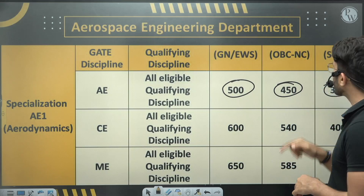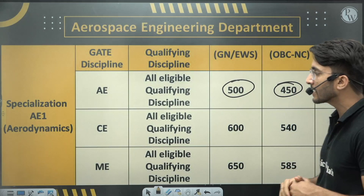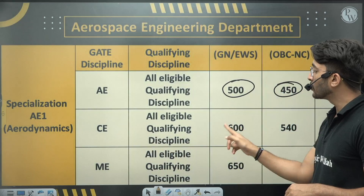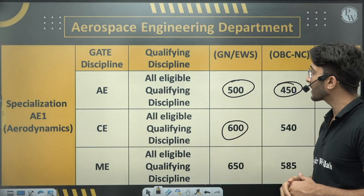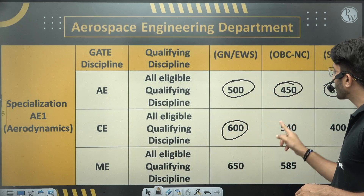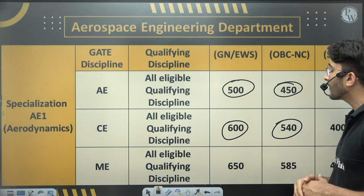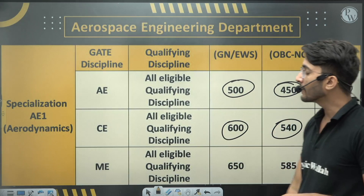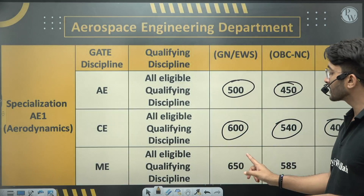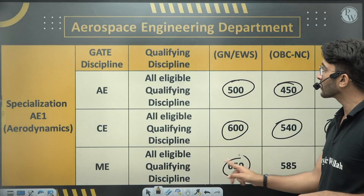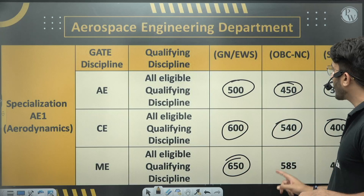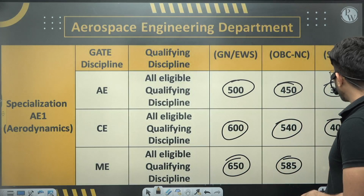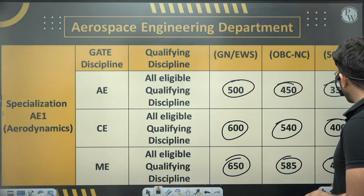For the Civil discipline under Aerodynamics, the cutoff for General/AWS is 600, for OBC-NCL it is 540, and for SC/ST it is 400. For Mechanical, the cutoff is 650 for General/AWS, 585 for OBC-NCL, and 433 for SC/ST.